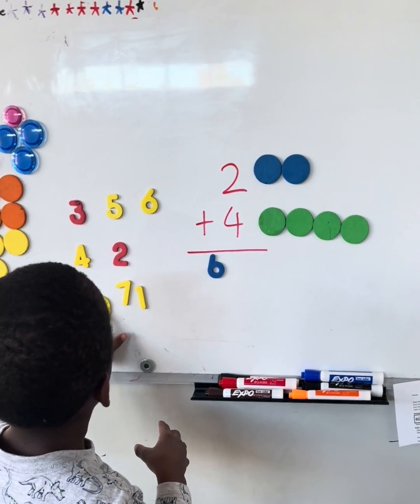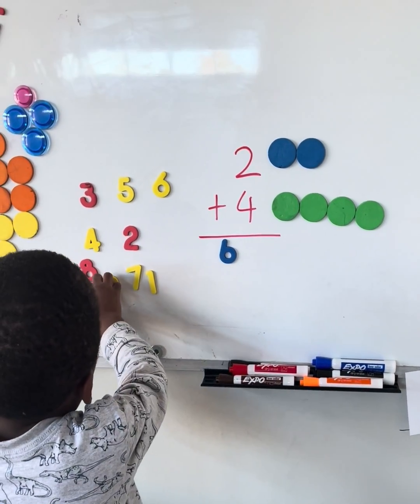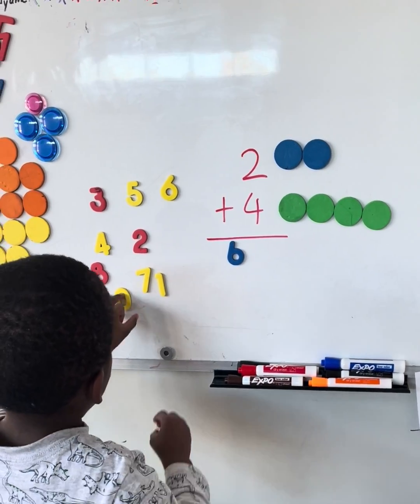And then this little added trick of identifying the numbers allows them without having to write to still learn addition. So some people may think that before a child can write, they may not be able to do this kind of work, but still just based on the number recognition and these magnets, you can still teach them addition. Good job.